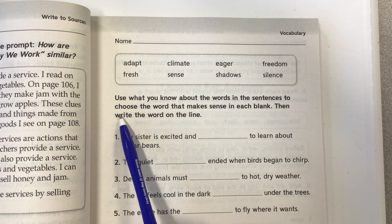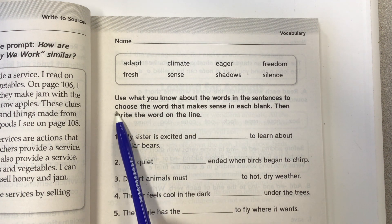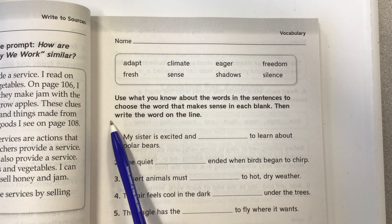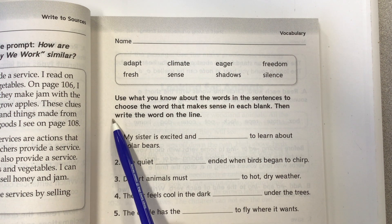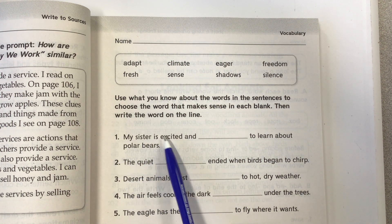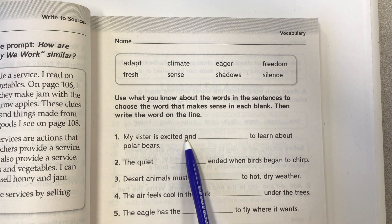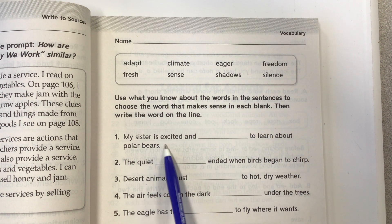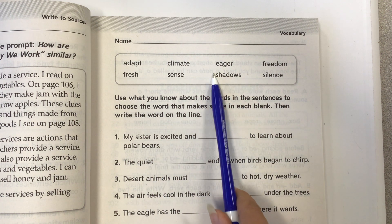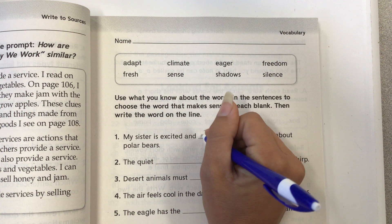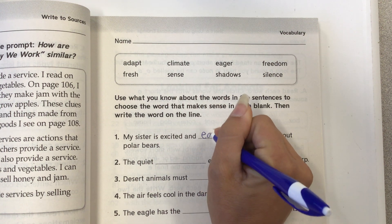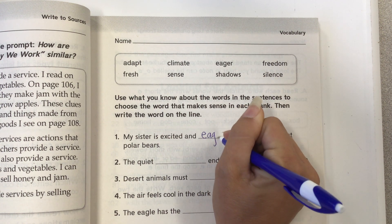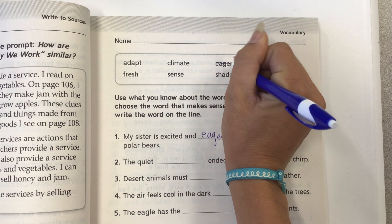Use what you know about the words in the sentences to choose the word that makes sense in each blank, then write the word on the line. Number one: my sister is excited and blank to learn about polar bears. Another word for excited would be eager, so we would write that word on the line, and I'm going to cross it off.